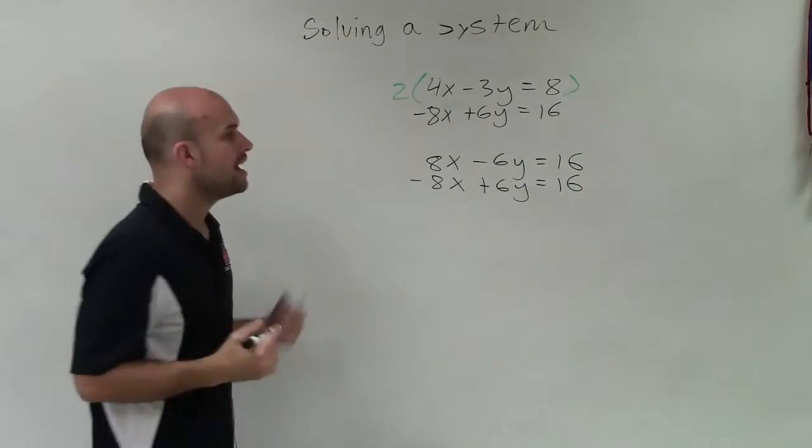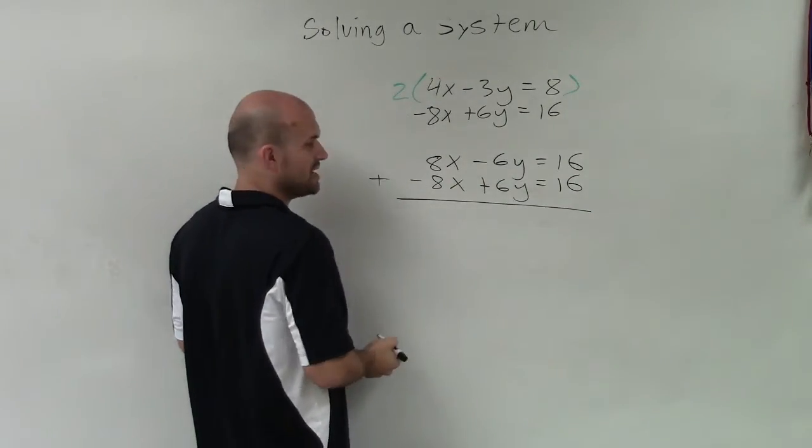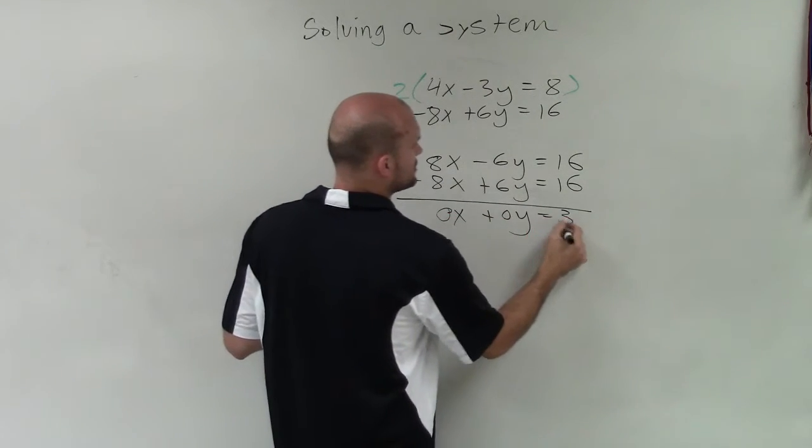All right, so now when we add the two equations, by applying elimination, we get 0x plus 0y equals 32.